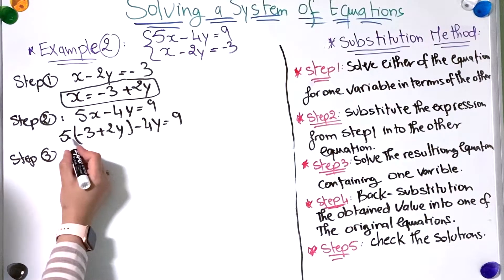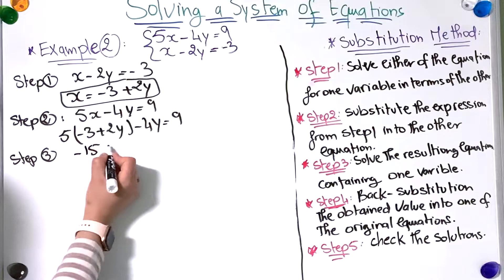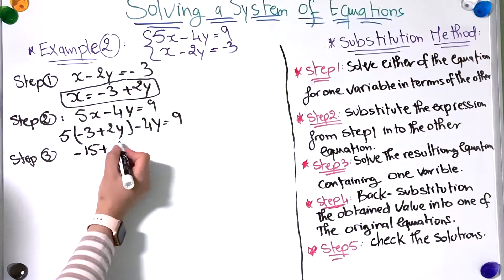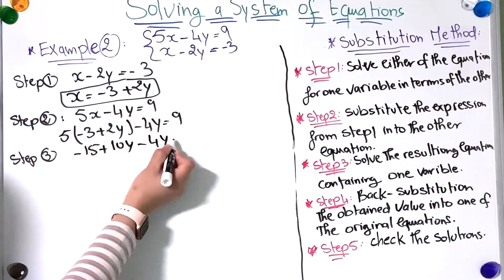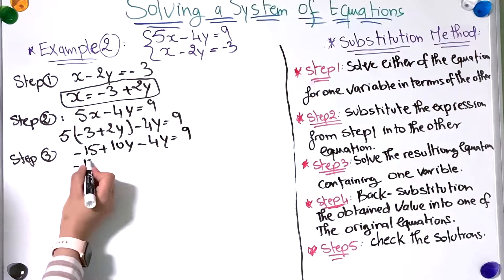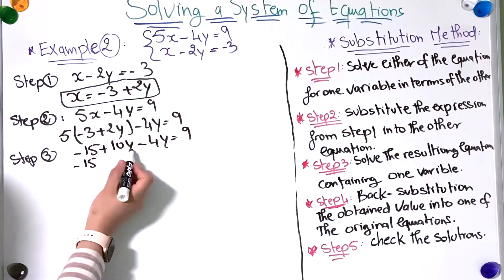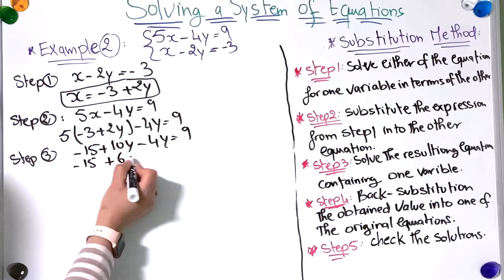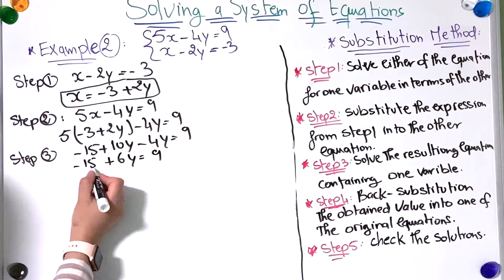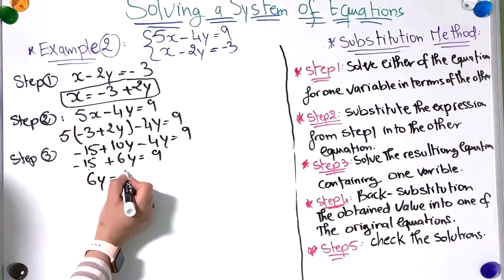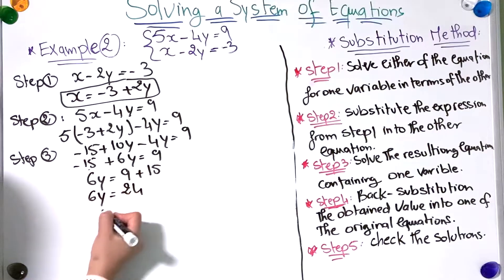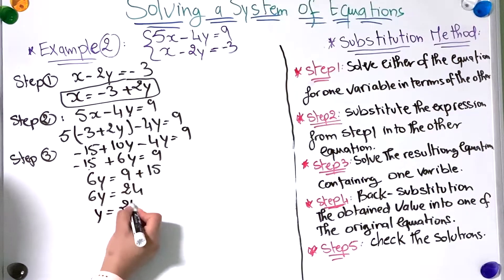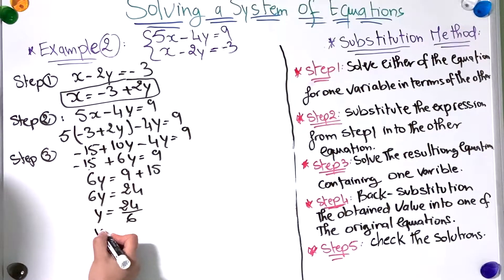Expanding: 5 times minus 3 equals minus 15, and 5 times 2y equals 10y, minus 4y equals 10y minus 4y, which is 6y. So minus 15 plus 6y equals 9. Adding 15 to both sides, 6y equals 24. Dividing both sides by 6, y equals 24 over 6, so y equals 4.